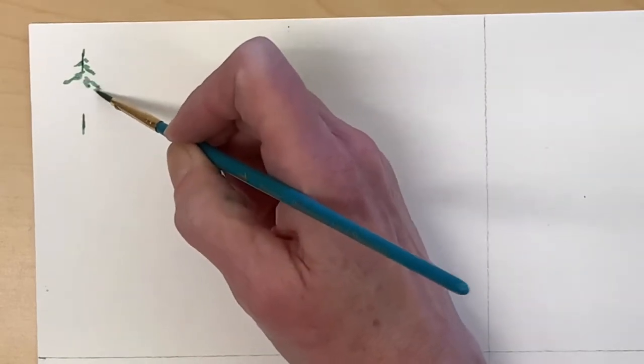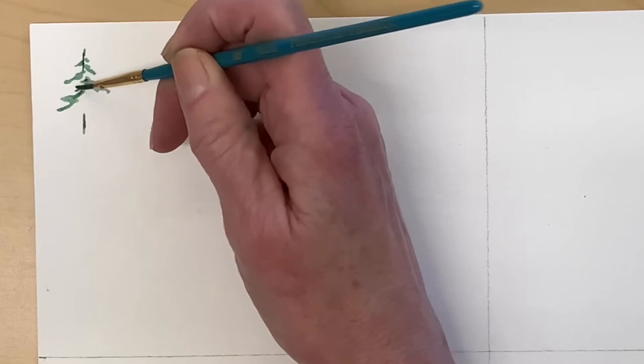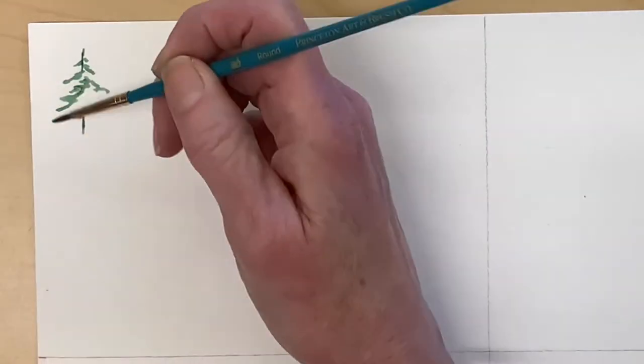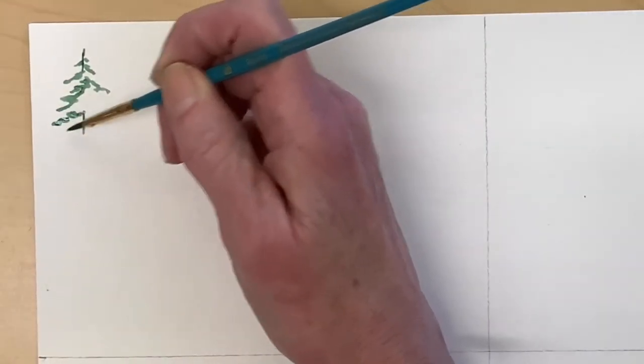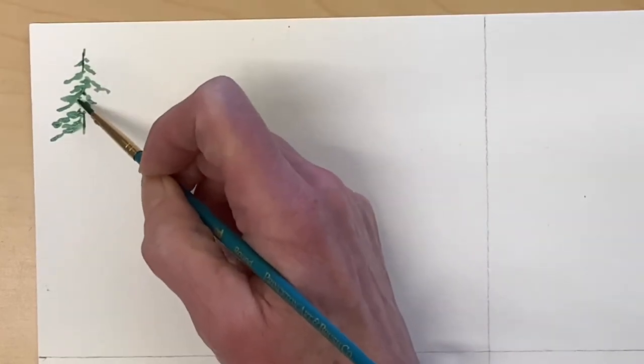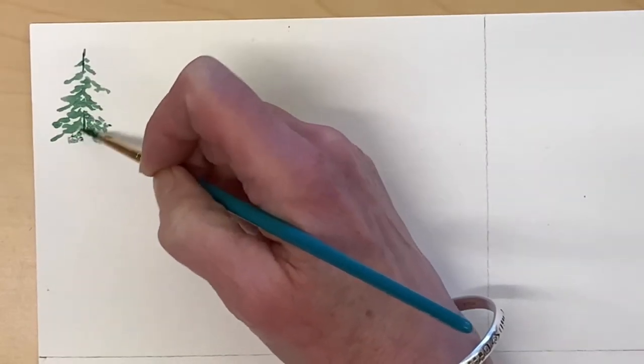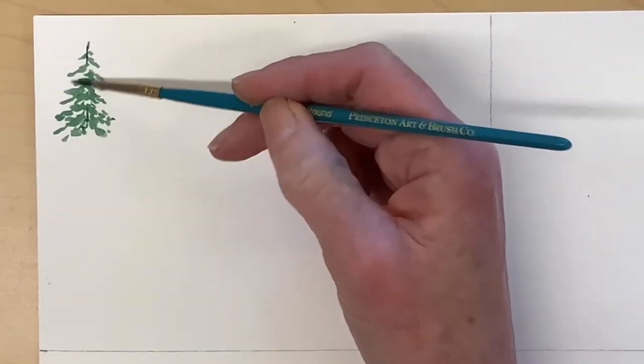I'm putting in the top branches. The branches towards the top of the tree will be shorter, of course, and then as they move down the trunk, they will be longer and more full. Make sure to have some marks in the front of the tree so you're covering part of the trunk. And I'm trying to make sure that I have some randomness to it so it's not even on both sides.